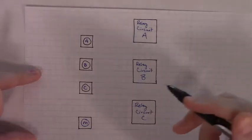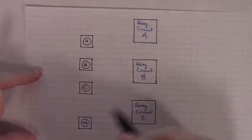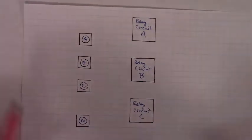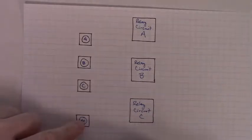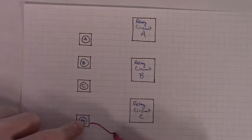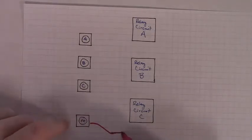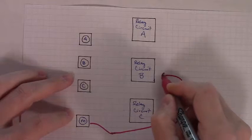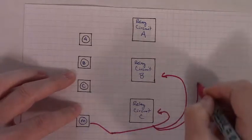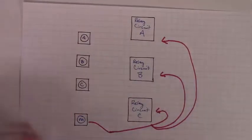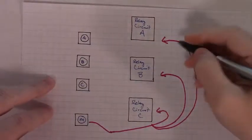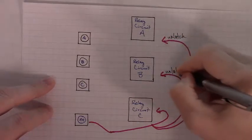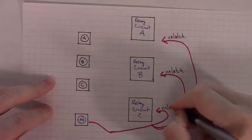First, let's think through what's going on with the master reset button. And what is the basic functionality? What does it have to do? Well, just simply, when we push the master reset button, we want it to unlatch. We do a single push of the master reset and we want it to unlatch relay circuit C, relay circuit B, as well as relay circuit A. That would be an unlatch event times three. One push of a button unlatches all three latching relay circuits.